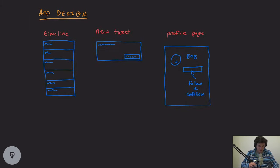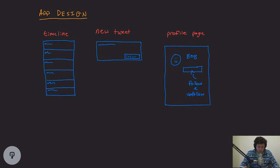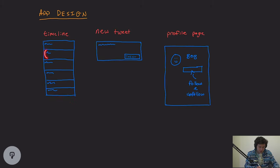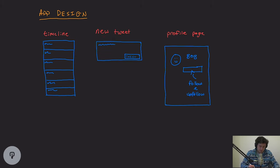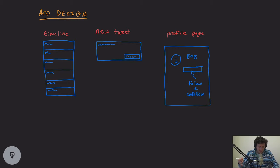We'll start off by going over some simple application design. It's good to start an interview with this — whether you draw it out or just speak about it — so the interviewer and you have a common basis of what is understood. So let's start with the timeline: there's an expectation that the timeline is going to be a page of tweets, and each of these blocks is a tweet. There's some sort of button at the top of the page that allows me to go to the new tweet screen, where I can write 120 characters of content and click tweet. When I click tweet, I expect this to show up on the timelines of the people who follow me.